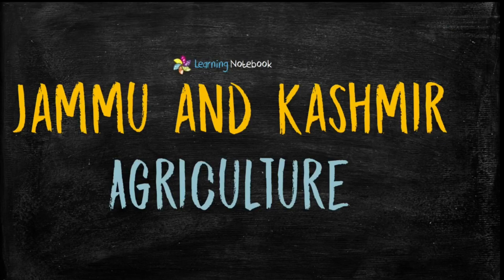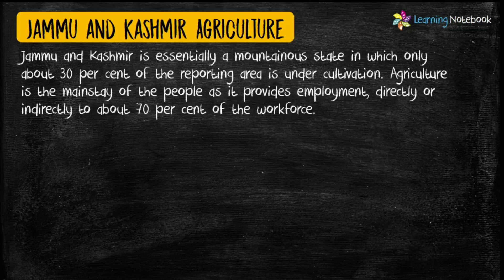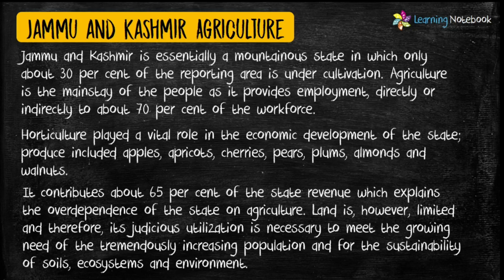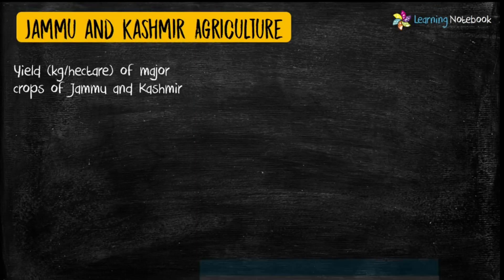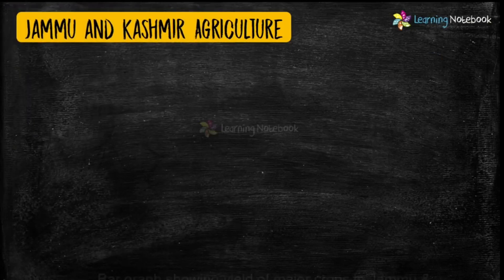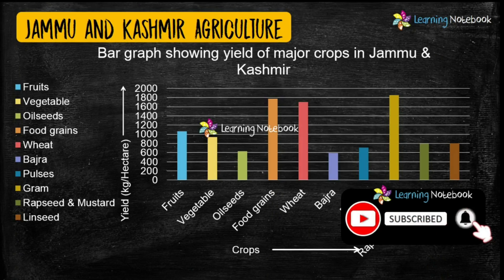The last topic for your Maths Art Integrated Project is Agriculture of Jammu and Kashmir. You can take help of a bar graph to show yield of major crops of Jammu and Kashmir, as shown here.